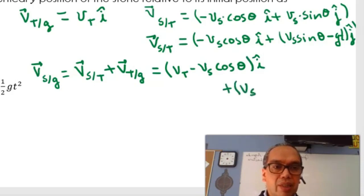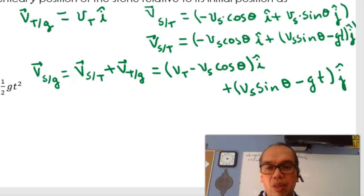vs sine of theta minus gt for the velocity in the y direction, and that varies with time. Therefore, your